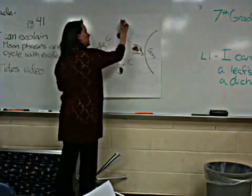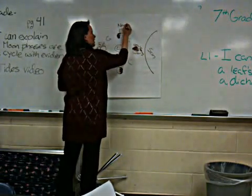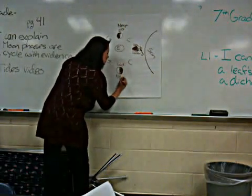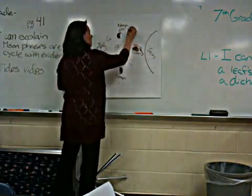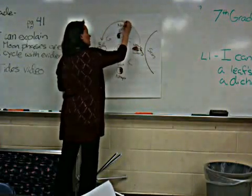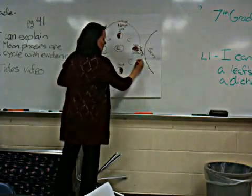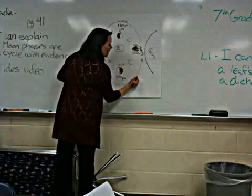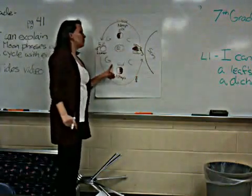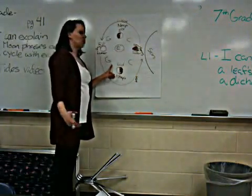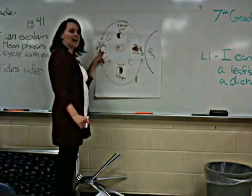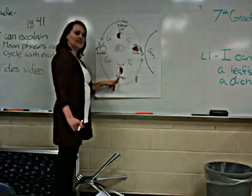Up here are neap tides, and down here are neap tides. The Moon waxes and wanes through these phases. So in a given month — approximately 28 days — we will have two spring tides and two neap tides.